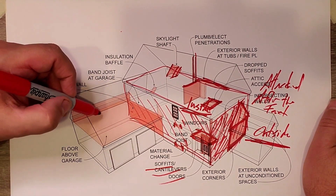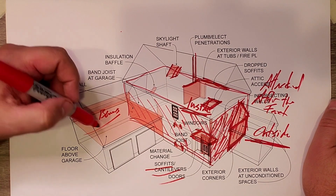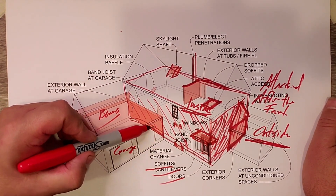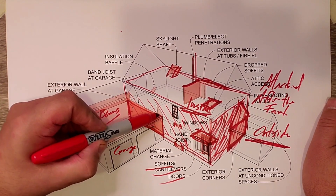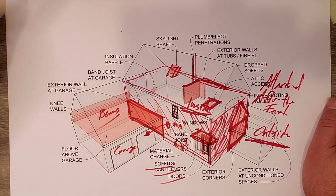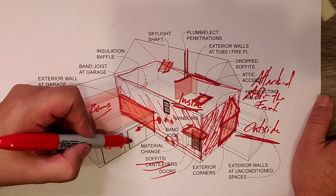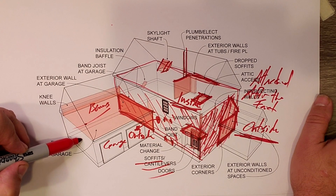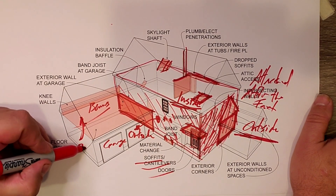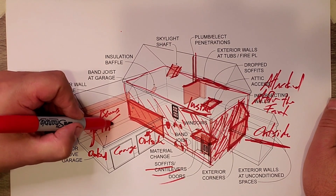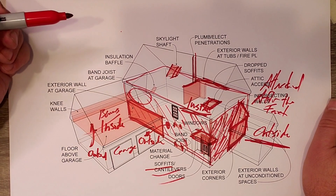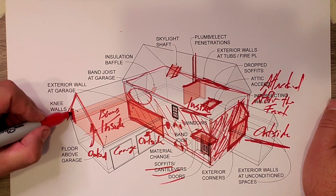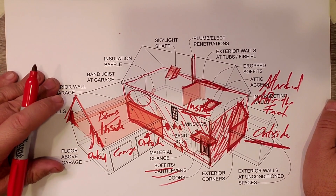One of the bigger problems is this bonus room that people love to put over the garage. The problem with that is we have an air barrier we have to maintain between the house and the garage, because the house is inside and the garage is outside. The upstairs versus the downstairs — the garage is outside, but the bonus room is inside. A lot of times this bonus room is kind of cape style, and the problem is you end up with these areas where this attic space is confused — is it outside or is it inside?